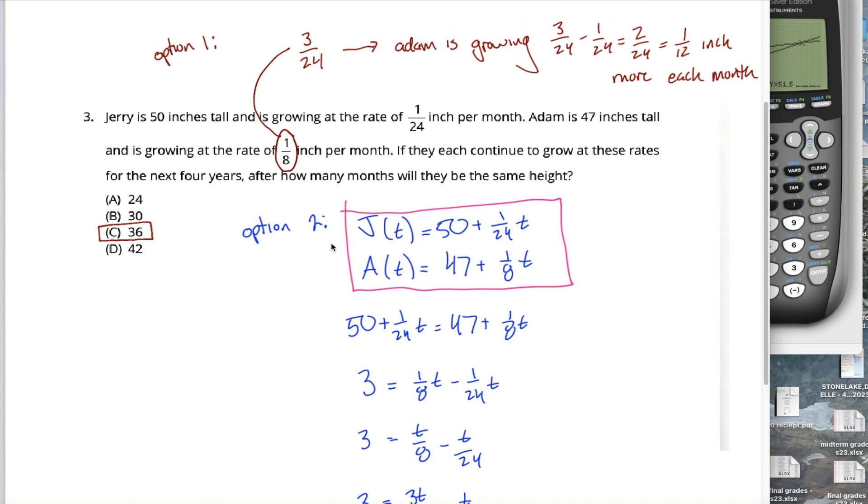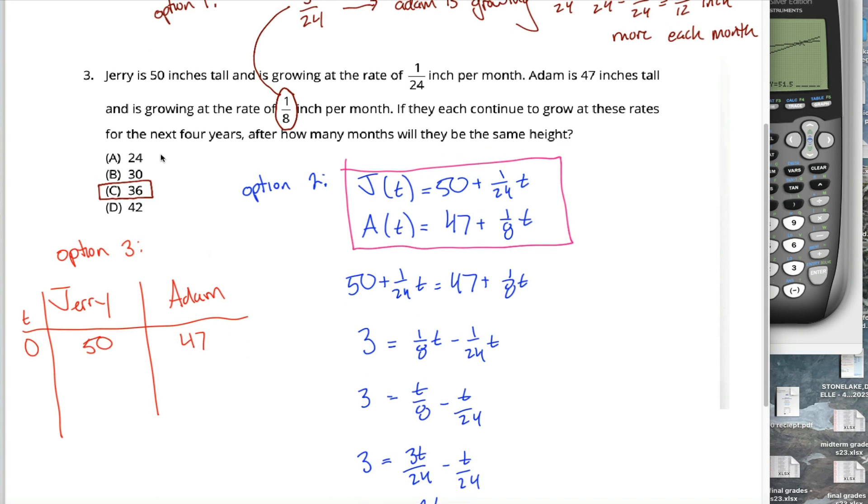Not to beat this thing to death, but if you didn't get this intuitive appeal and you don't like functions or graphing them, there's still a pretty easy way to get your answer. Just keep track of these kids' height. We got Jerry and we got Adam. When time is zero, Jerry's 50 inches tall and Adam's 47 inches tall. What about when time is equal to 24?